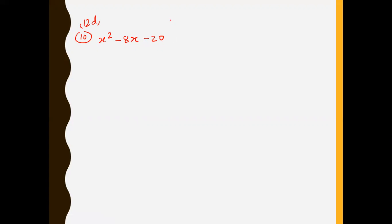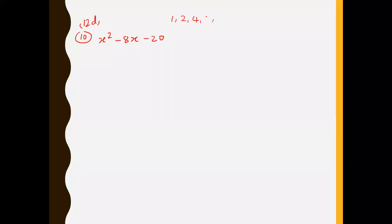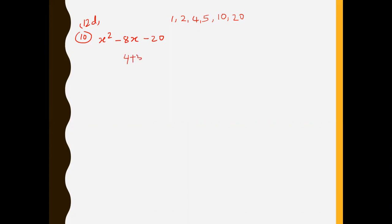The factors of 20 could be one, two, four, five, ten, and twenty. Now look at all of these — which ones when added together give you 8, and when multiplied give you 20? Four plus five is nine and four times five is 20, so the multiplication is correct but the addition is wrong.